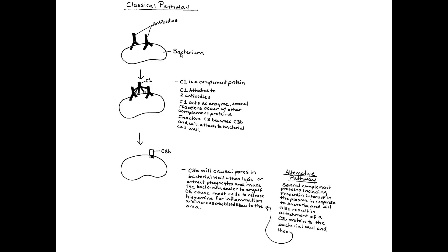In the classical pathway, a bacterium has invaded the tissue and on its surface are antibodies. C1, a complement protein, attaches itself to two antibodies at once and acts as an enzyme. Several reactions occur with other complement proteins. Inactive C3 becomes C3B and attaches itself to the bacterial cell wall.